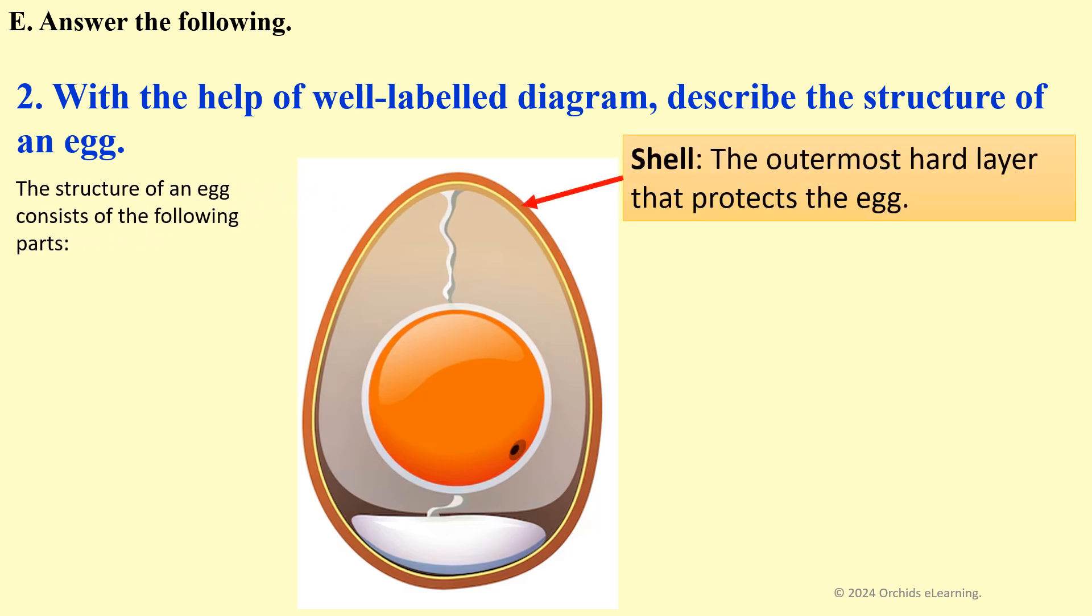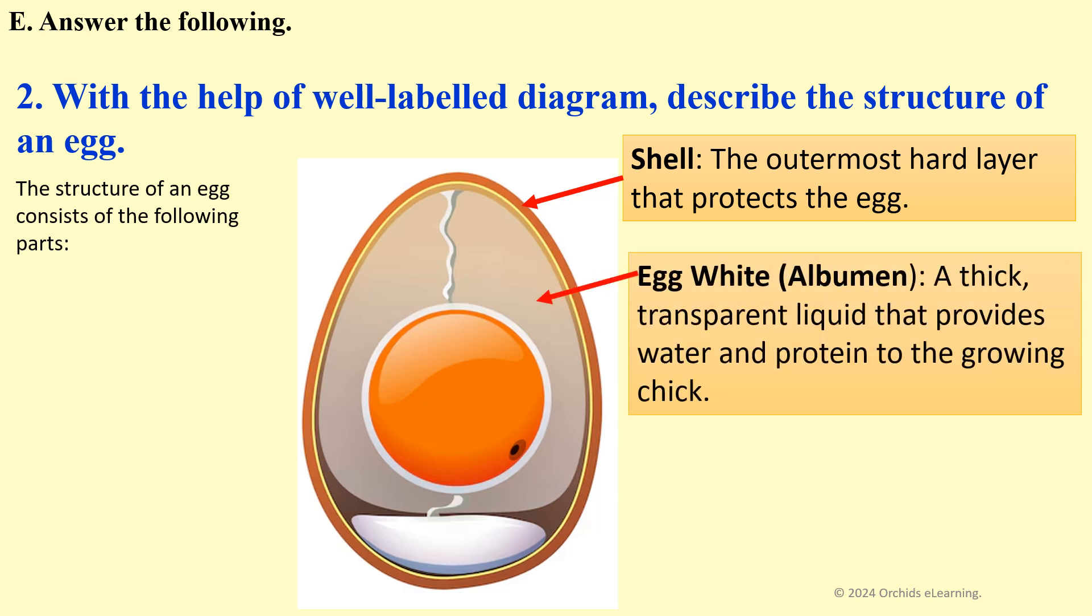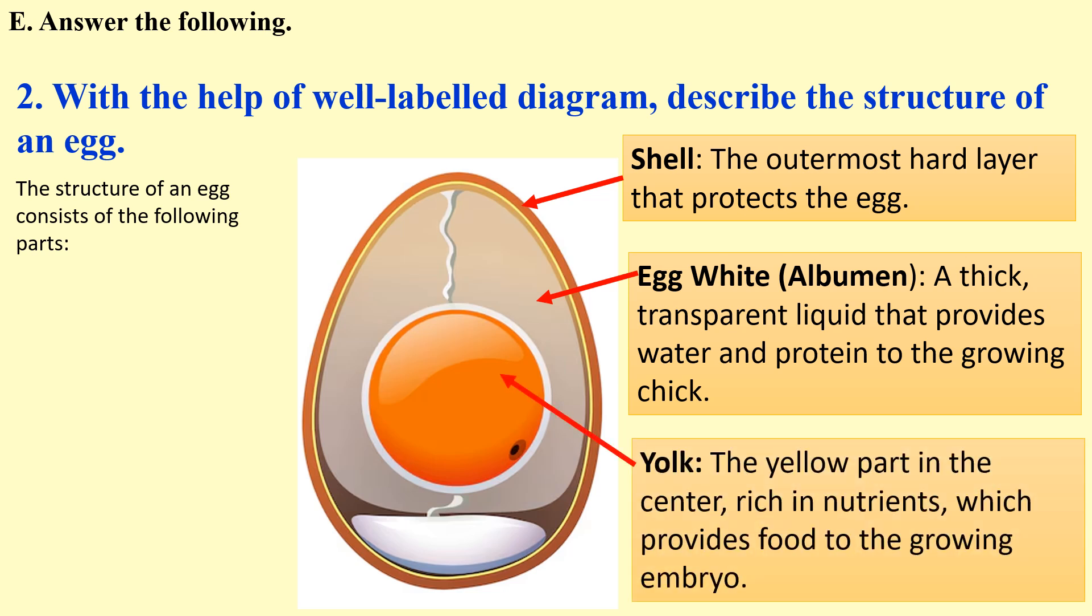Shell: The outermost hard layer that protects the egg. Egg white or Albumin: A thick, transparent liquid that provides water and protein to the growing chick. Yolk: The yellow part in the center, rich in nutrients, which provides food to the growing embryo.